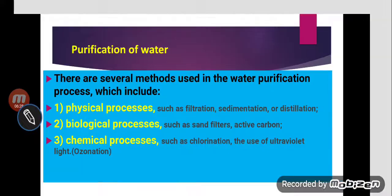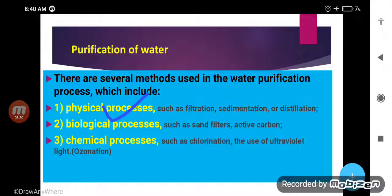The water purification processes that must be done before sending water to our houses include: physical processes such as filtration, sedimentation, and distillation; biological processes such as sand filters and activated carbon; and chemical processes such as chlorination and ultraviolet radiation or ozonation. These processes are used to purify water, kill germs, and remove dirt from the water.